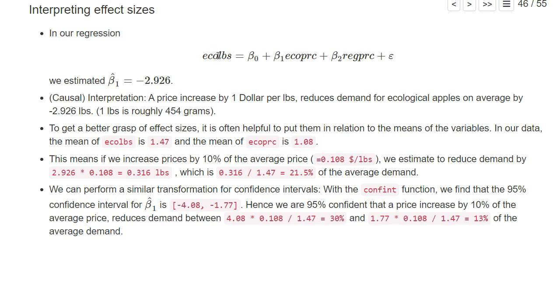In our second regression, we regressed the demand for ecological apples on the prices of ecological apples and on the prices for regular apples. We found an OLS coefficient in front of the price of ecological apples of minus 2.9. Since our data was generated by a well-randomized experiment, we can interpret this estimated coefficient β₁ hat in a causal fashion.